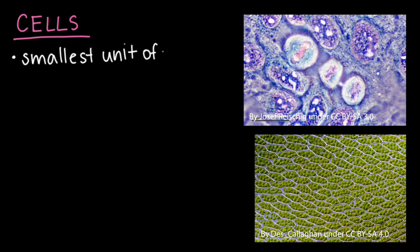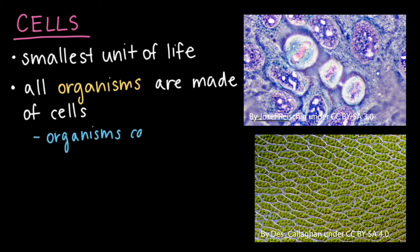So to sum up cells and organisms, today we learned that cells are the smallest unit of life. We talked about how all organisms are made up of cells, and that organisms can be unicellular or multicellular.